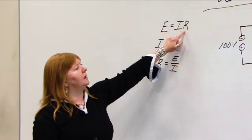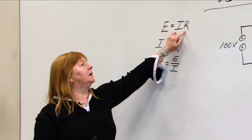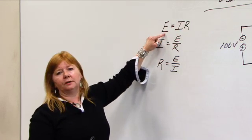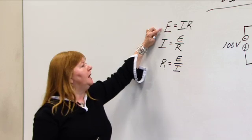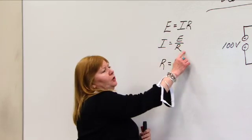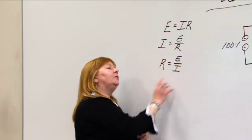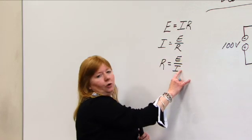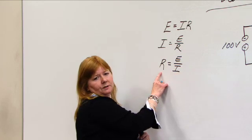As long as I know two pieces of what I call that three piece puzzle, we can solve for the missing piece. If I know current and I know the resistance for that resistor, I can multiply them together and get the voltage. Two pieces to what I call that three piece puzzle. If we know voltage and we know the resistance and we do the division, we get current.